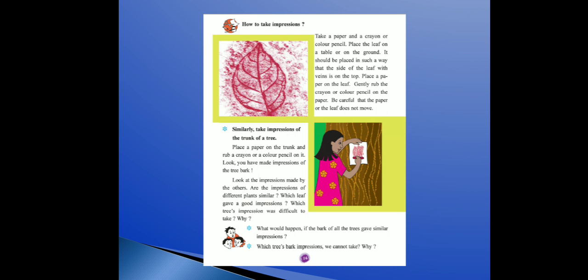Look at the impressions made by others. Are the impressions of different plants similar? Which leaves give a good impression? Which tree's impression was difficult to take, and why? What would happen if the bark of all trees gives a similar impression? Agar sab trees ki jo bark hai uski ek jaise impression hoti, toh kya mushkili ho sakti hai?